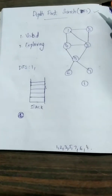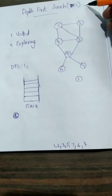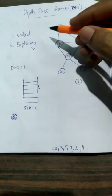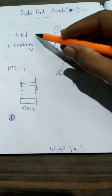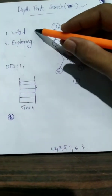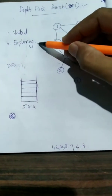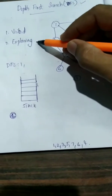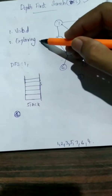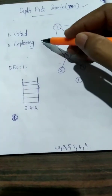We are going to discuss the depth first search. We are going to explore the two properties in BFS and explore the difference between BFS and DFS. Let's take a look at the example.